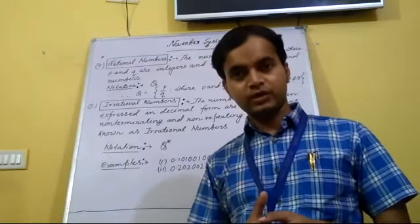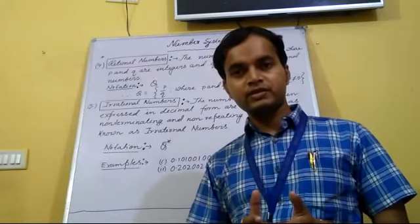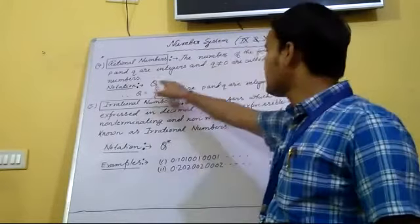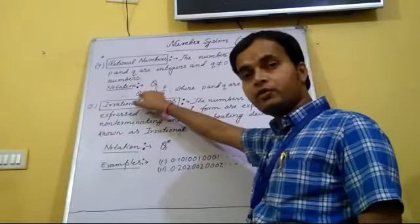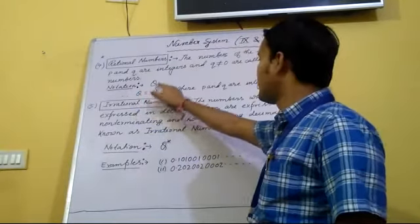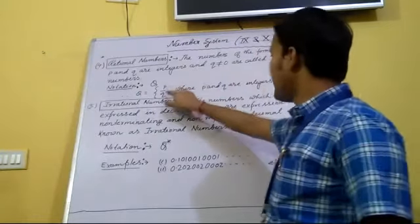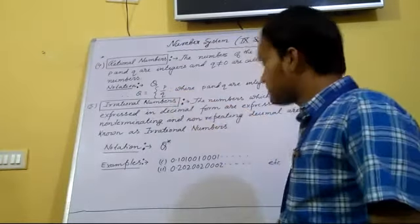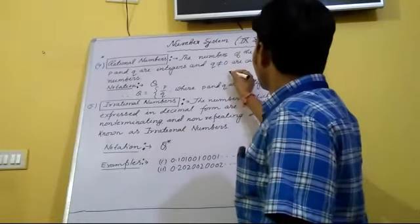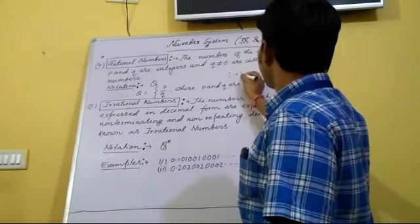The set of rational numbers is usually denoted by capital Q. And in the set form Q will be written as in the curly bracket p by q such that.